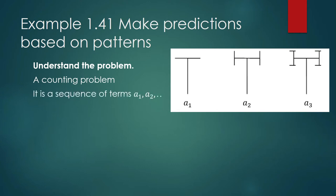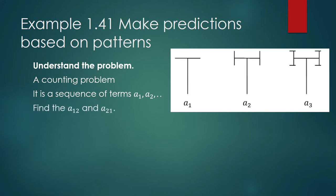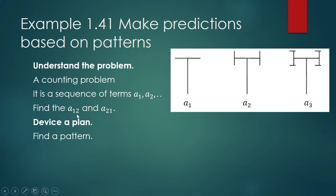We can look at this as a sequence of terms: a sub 1, a sub 2, a sub 3, and so on. The elements of the sequence are the number of sticks in each term. So we must find the 12th term and the 21st term. Now let us devise a plan — the plan is to find a pattern and then use that pattern to make an intelligent guess about the 12th and 21st terms.